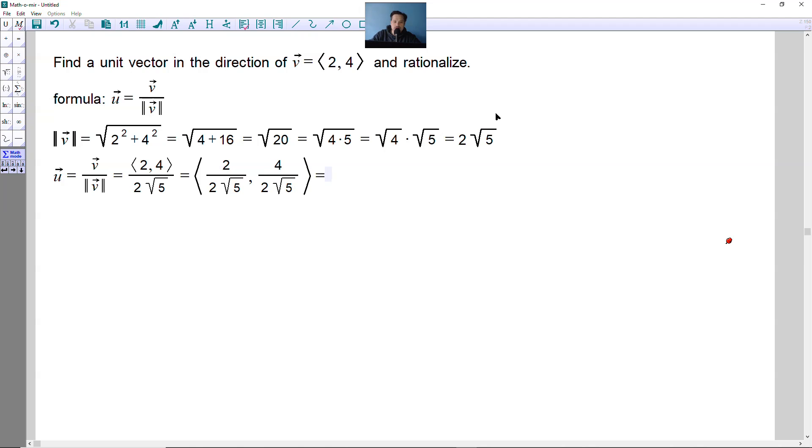Simplify this a little bit. So in the first fraction, 2 divided by 2 is 1, and then you have the square root on the bottom. So as a first stage, it would look like this now: 1 over the square root of 5. For the second one, you have 4 divided by 2, that's 2 in the top. So 2, and in the bottom you would also then have the square root of 5. Now you just have to rationalize each one.